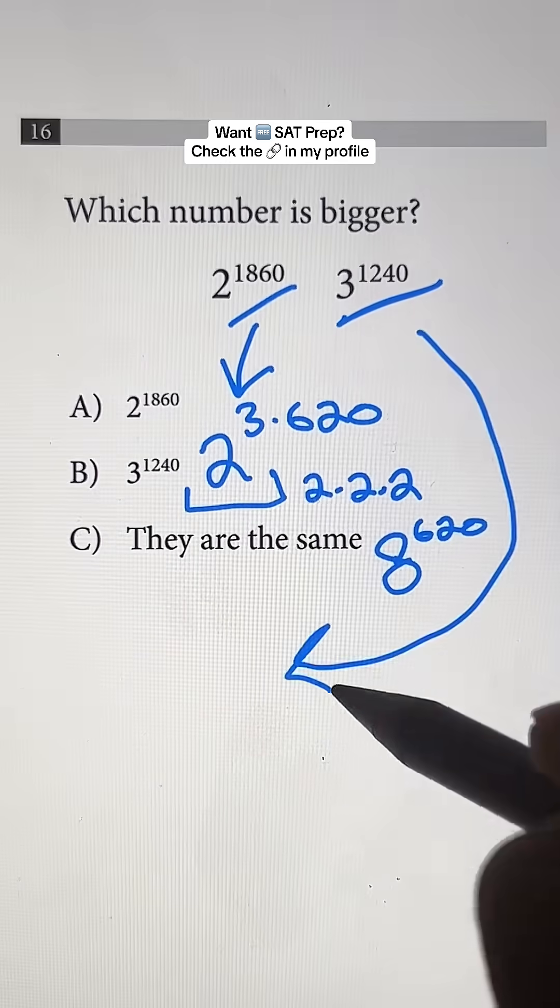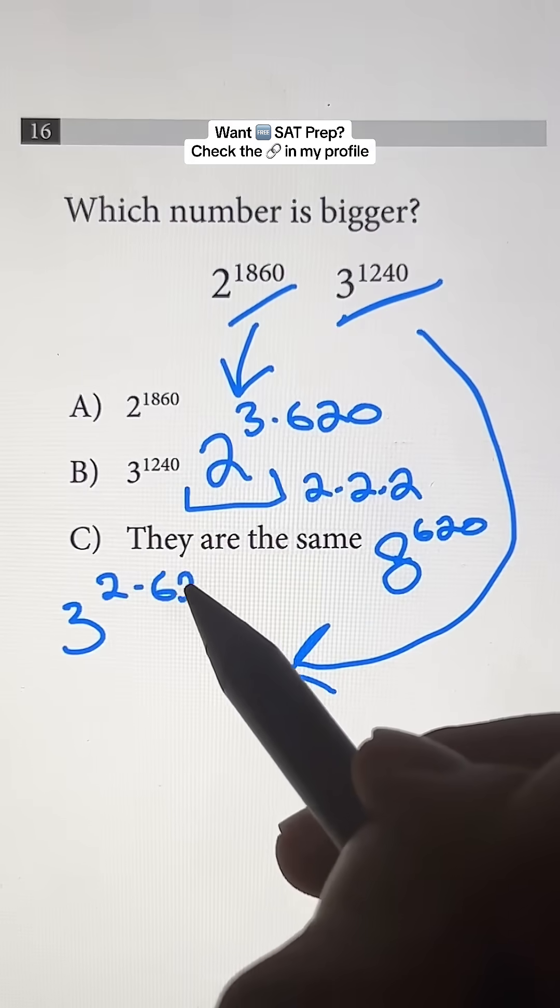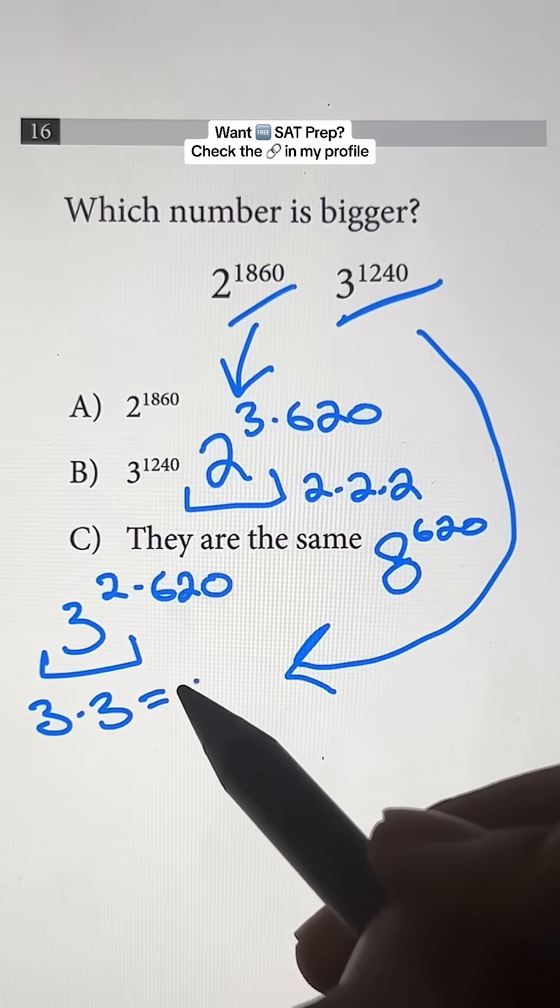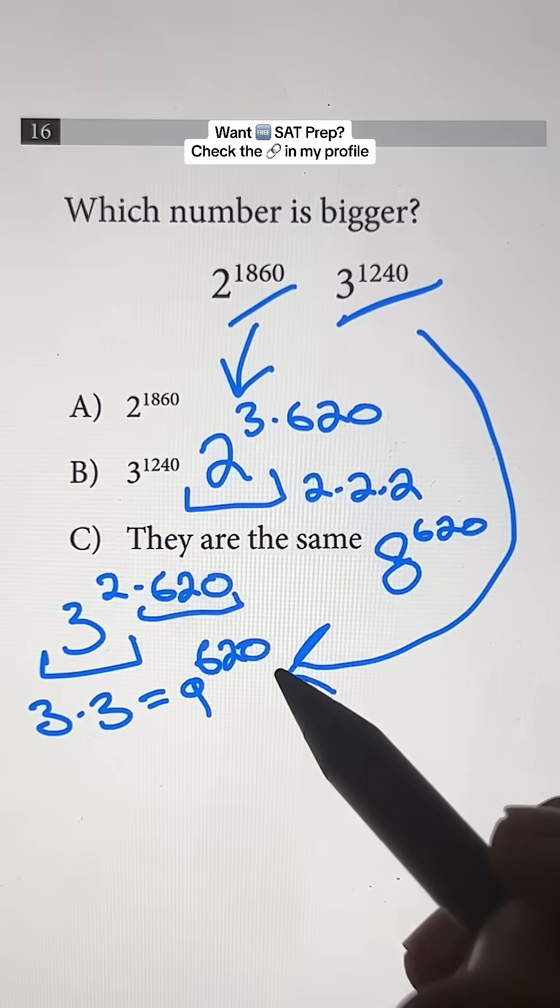So now we have to simplify 3 to the 1240th power. And for this one, we can rewrite it as 3 to the 2 times 620th power. And when we do 3 to the second power, that's just going to turn into 3 times 3, and that's going to give us 9. And we just have to drop down the exponent, which is 620. So we have 9 to the 620th power.